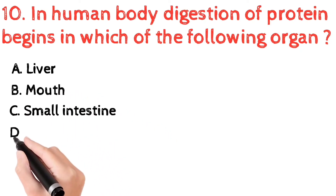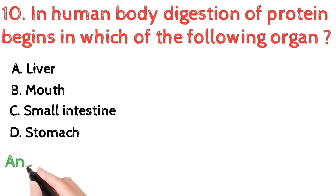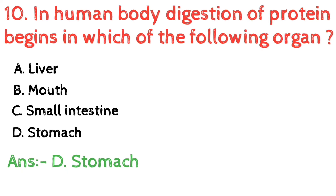Question number 10: in the human body, digestion of protein begins in which organ? a) liver, b) mouth, c) small intestine, d) stomach. The correct answer is d) stomach. The enzyme pepsin digests protein, and the chief cells of the stomach secrete the enzyme pepsin along with HCl, so the digestion of protein begins in the stomach.